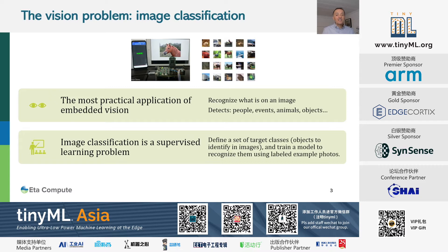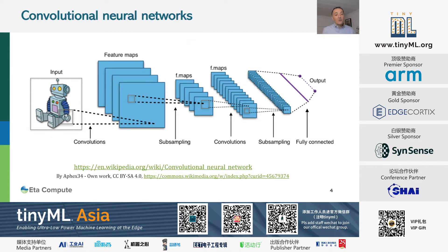Image classification is used to detect and count objects, people, animals, and events. It is a supervised learning problem, which means we provide labeled images and labeled examples to train the model. Most image classification algorithms use a convolutional neural network as an architecture, or CNN.